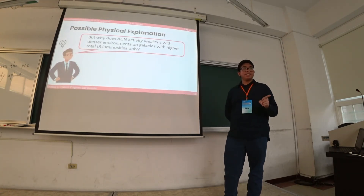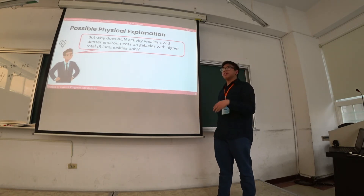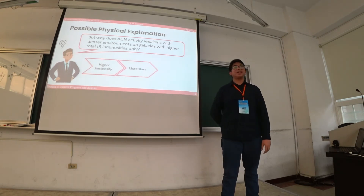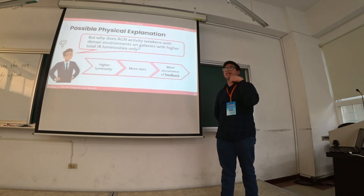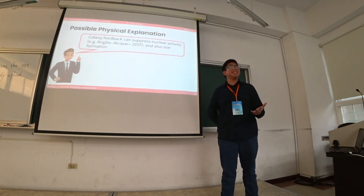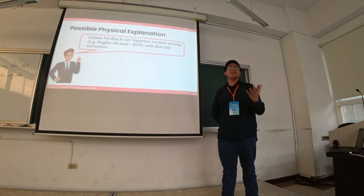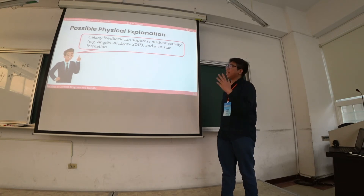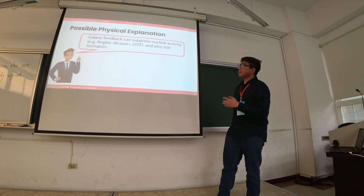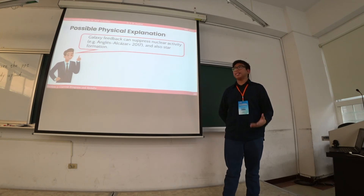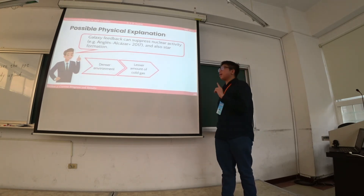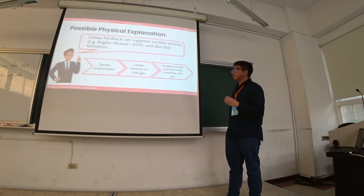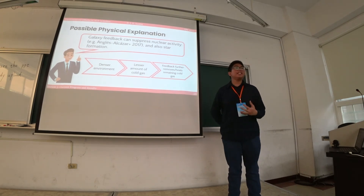So in denser environments, these activities become less pronounced. But why does AGN activity decrease with NLD only for our ULIRGs? If a galaxy is highly luminous, that means it has more stars and more chance of increased stellar feedback — more stars can have starbursts. Simulations have shown that bursty stellar feedback causes the ejection of cold gas from the galactic nucleus, which is effective in suppressing nuclear activities. At denser environments, there is already less cold gas available.